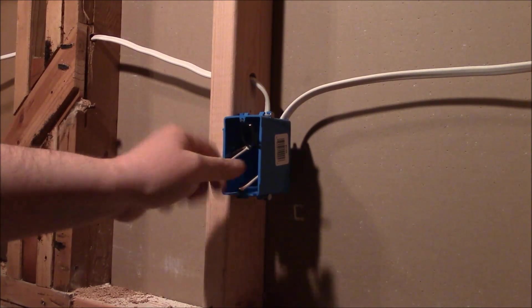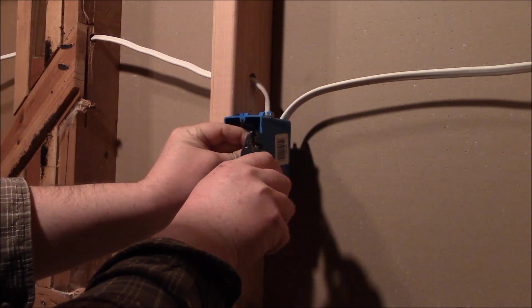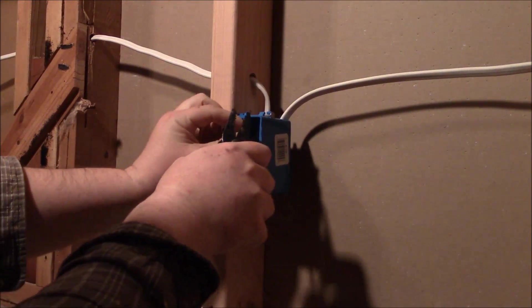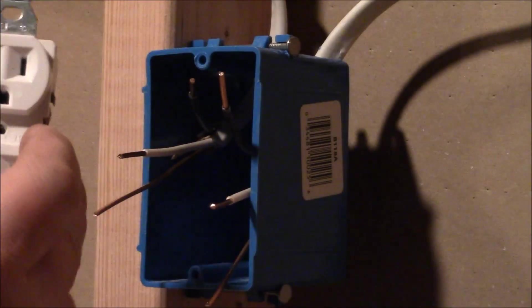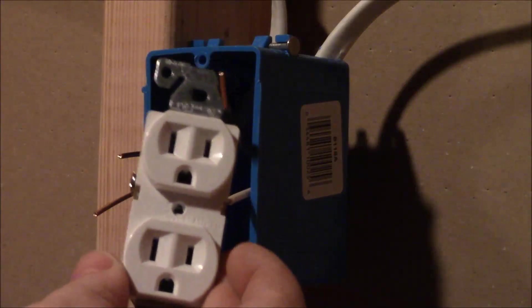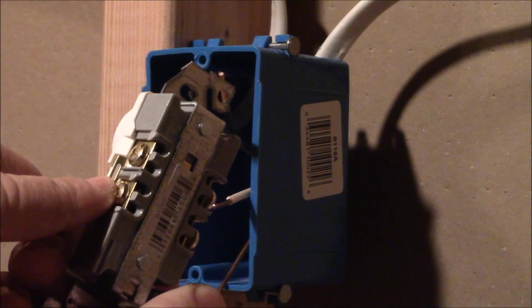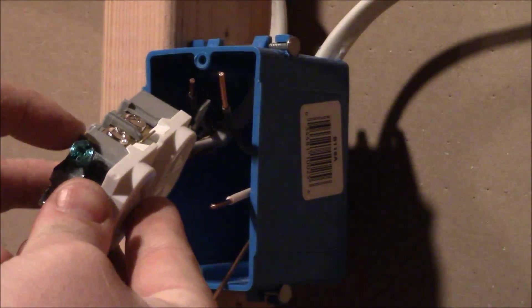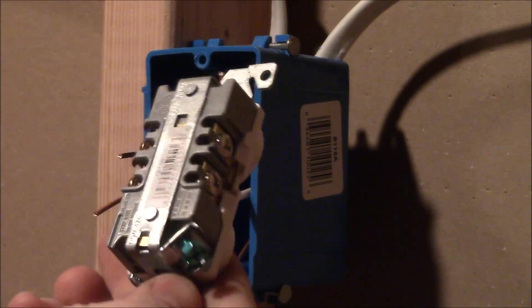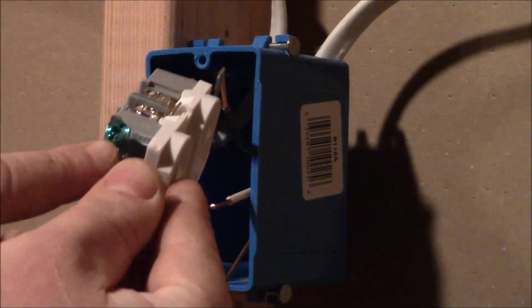First go ahead and strip all the wires. Once all the wires are stripped you're going to want to organize them a little bit. If you look at your plug you'll notice that the back there is a brass screw and a silver screw and always a green screw. Brass is hot, silver is neutral and green is ground.